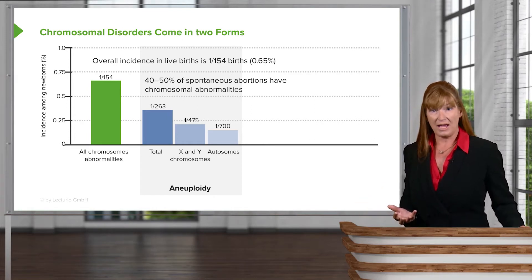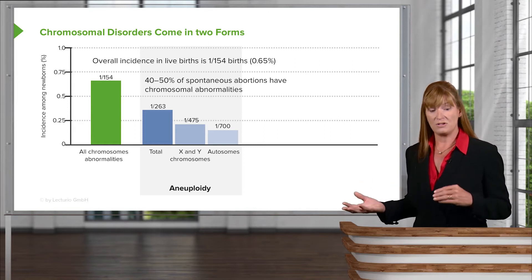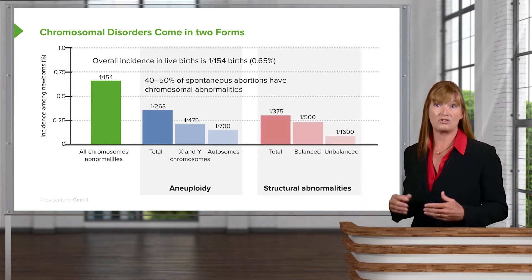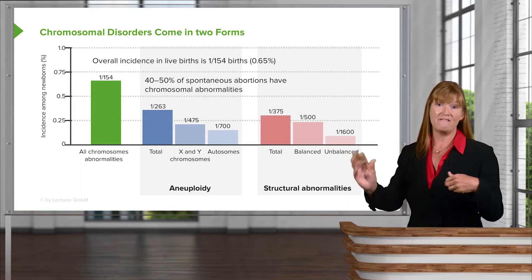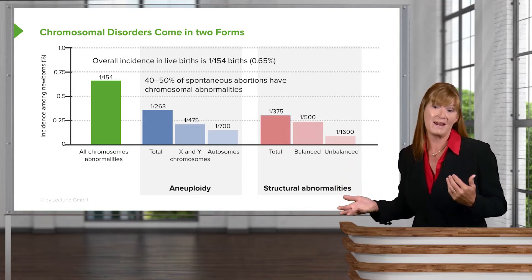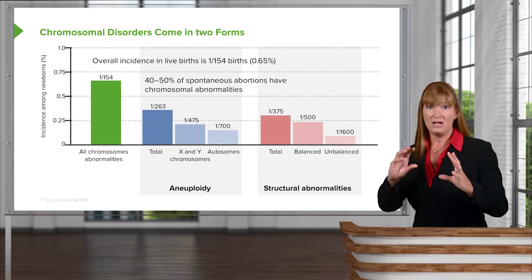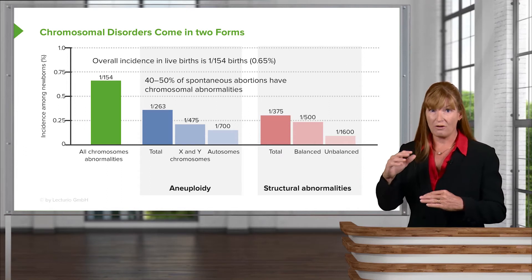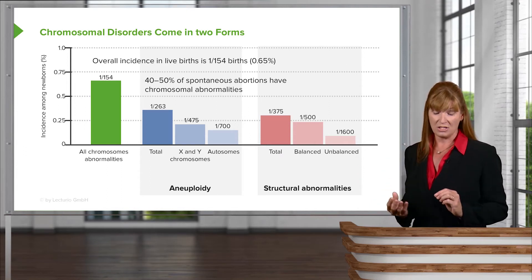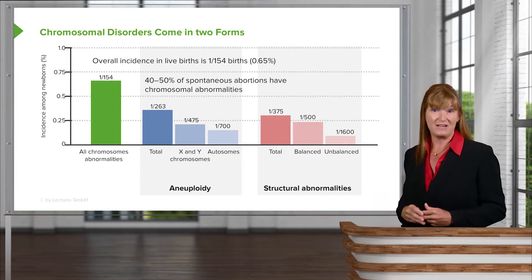The other category or class of chromosomal abnormalities are structural abnormalities. And again these are where we might see inversions or deletions or breaks on a smaller scale. So there's a partial chunk of chromosome that has been changed. And you can see the frequencies of each of those here.